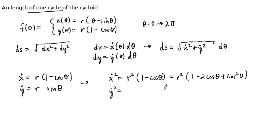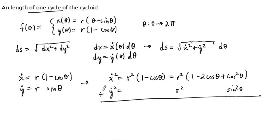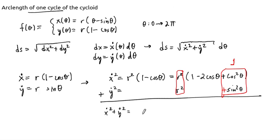Y-dot squared is r squared sine squared theta. When we add x-dot squared and y-dot squared together, r squared is a common factor. The cosine squared theta and sine squared theta terms add up to one by the Pythagorean theorem. So x-dot squared plus y-dot squared equals r squared times two minus two cosine of theta.